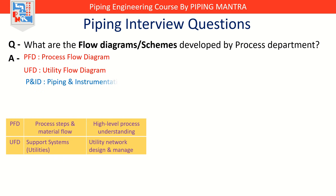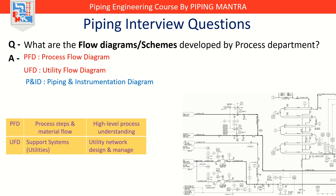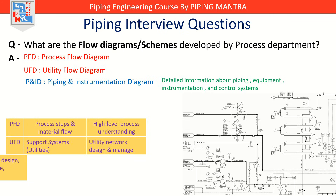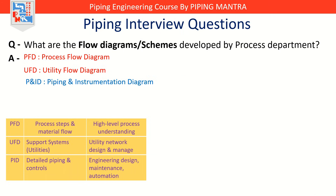Third is P&ID, that is Piping and Instrumentation Diagram. If the PFD is a map, the P&ID is like the blueprint of a car design — highly detailed and precise. It shows every piping detail, equipment, instrumentation, and control systems. Here you'll see valves, pumps, instruments like pressure gauges and flow meters, and control loops and exactly how they're connected. This is the diagram used by engineers, fabricators, and maintenance teams to actually build and operate the plant.